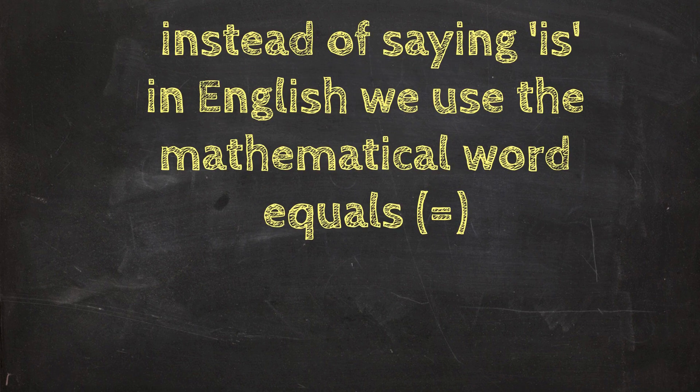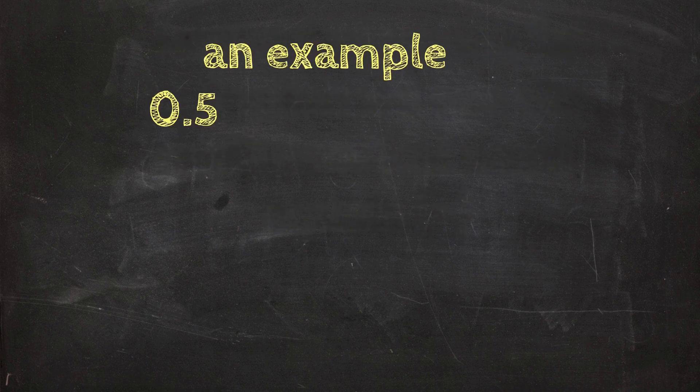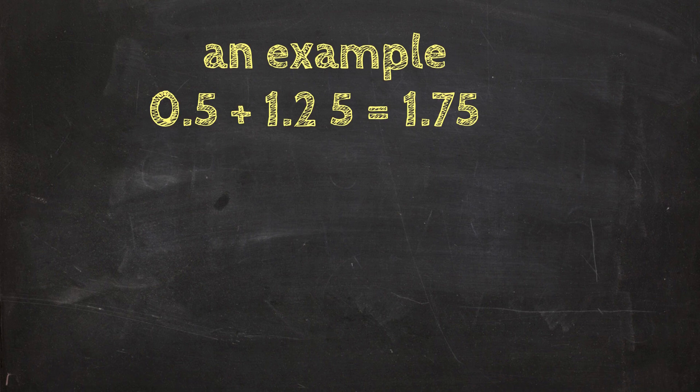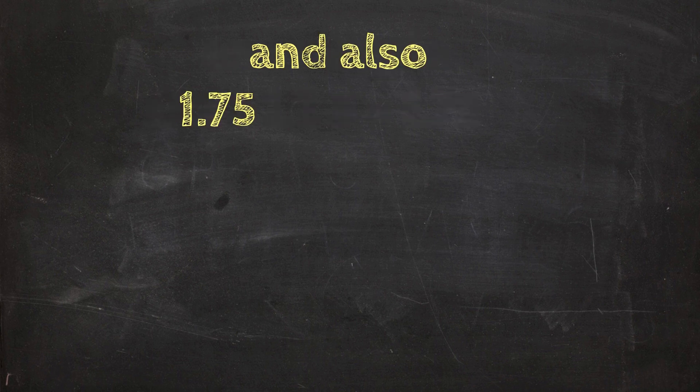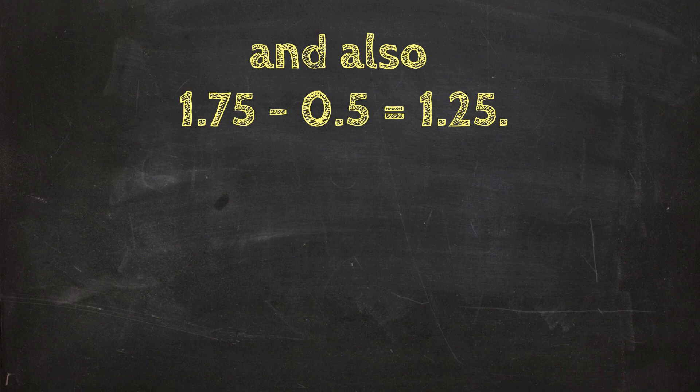Now instead of saying is, in mathematical terms we use the mathematical word equals, and the two bar lines are the symbol for equals. An example: 0 or 0.5 plus 1.25 equals 1.75, and also 1.75 minus 0 or 0.5 equals 1.25.